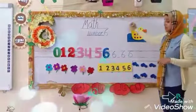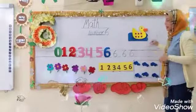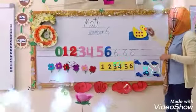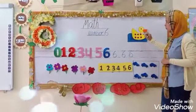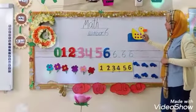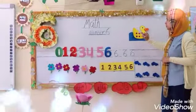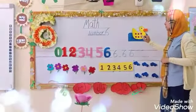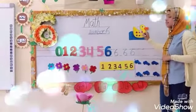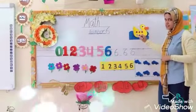Now, where are these? How many are here? 1, 2, 3, 4, 5, 6. Okay.